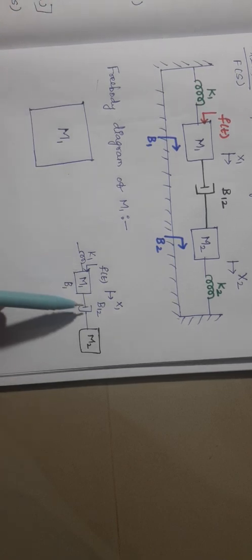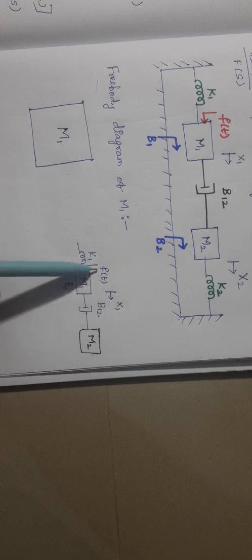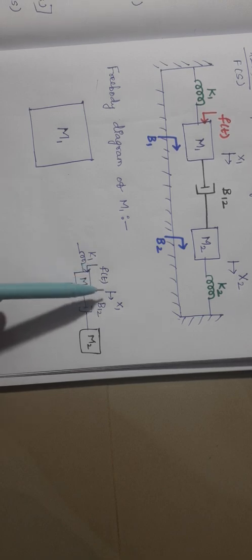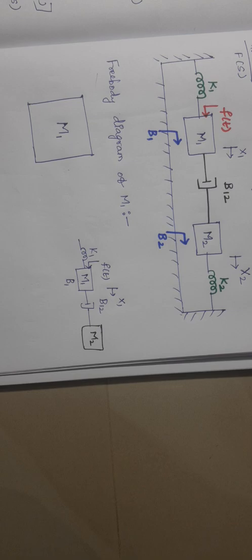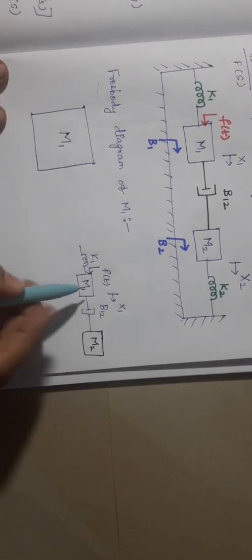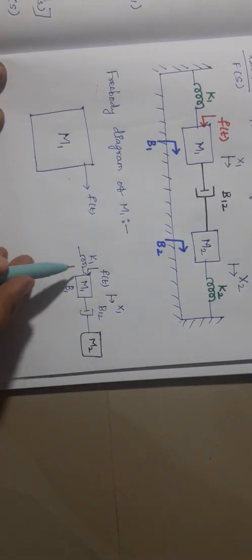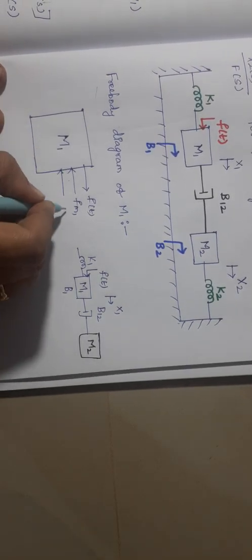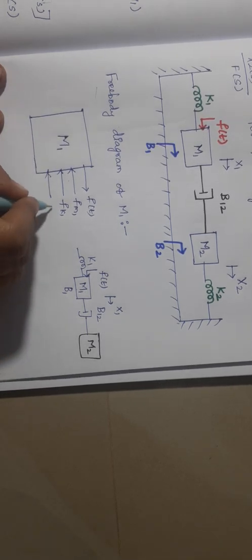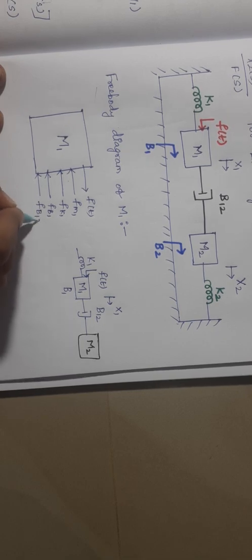Apart from these three elements, an opposing force will also be produced by mass m1 itself, making totally four opposing forces. The applied force is f(t), which acts directly on mass m1, and the respective displacement is x1. The opposing forces are provided by mass m1, spring k1, dashpot b1, and dashpot b12.